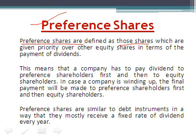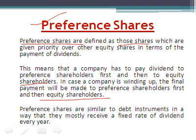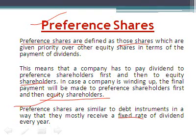Dividend preference share holder को पहले मिलता है और उसके बाद equity share holders को। In case a company is winding up, the final payment will be made to preference share holders first and then to equity share holders. Preference shares are similar to debt instruments in a way that they must receive a fixed rate of dividend every year. Preference shareholder को dividend मिलता है और dividend का rate fixed होता है — company profit करे या loss करे, company को preference shareholder को हर साल dividend देना पड़ता है।